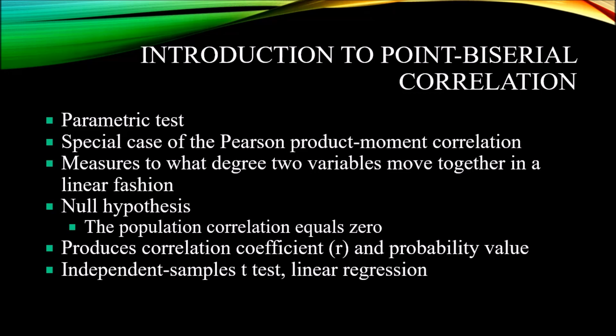An independent samples t-test requires the same configuration of variables — one dichotomous variable and one continuous variable — and it also produces a probability value. The p-value for a point-biserial correlation and the p-value for an independent samples t-test are identical. You could also perform a simple linear regression with these variables. The dichotomous variable would be the predictor variable and the continuous variable would be the outcome variable. With just that same configuration, the linear regression will also provide the same p-value as the point-biserial correlation and the independent samples t-test.